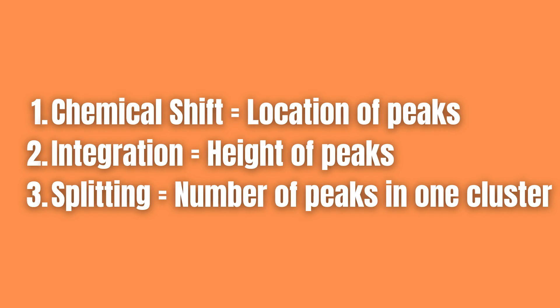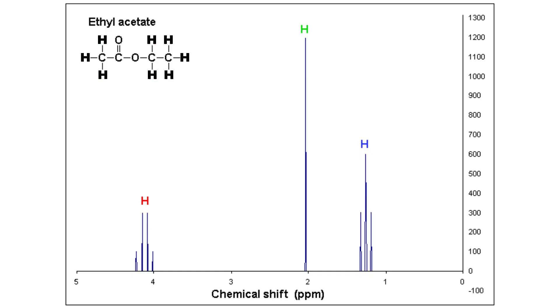Let's put all of this to use in another example. Here we can see the NMR spectrum of ethyl acetate, but this time we don't know which group is which. Let's use what we've learned so far to find that out.